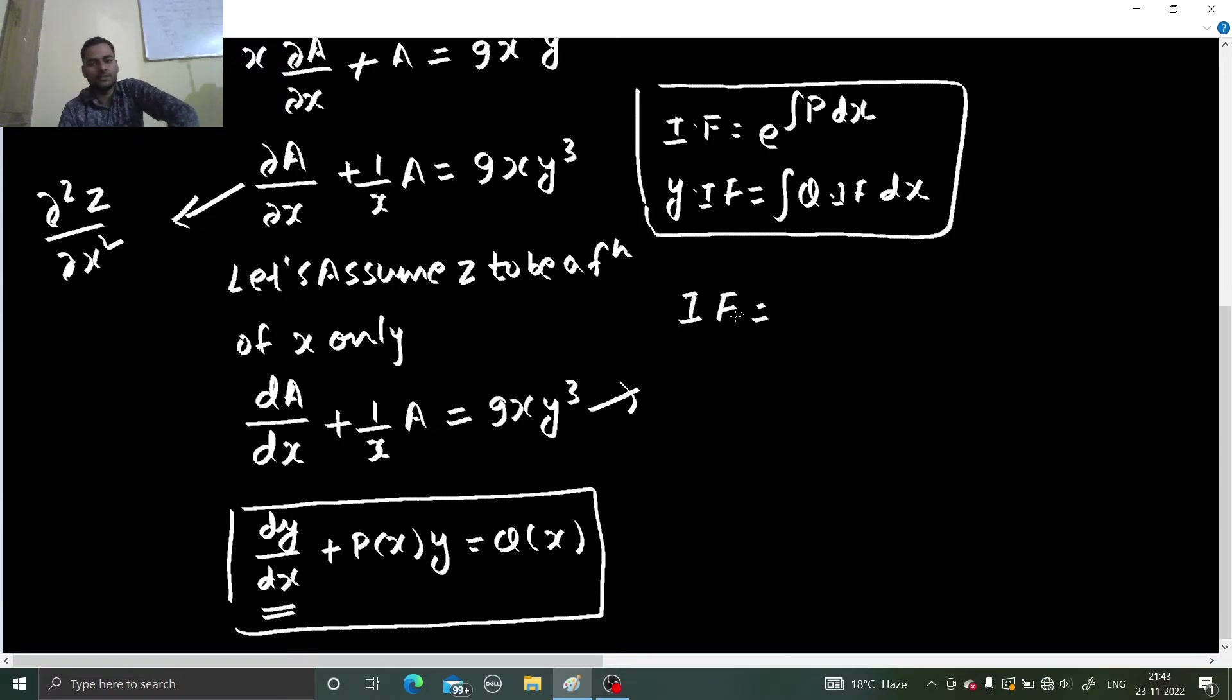If you apply this, find the integrating factor that will be e power integral 1 by x with respect to x. This will be e power log x and base is of course e. So this will give you x, basic properties of logarithm. So you got your integrating factor to be equal to x.